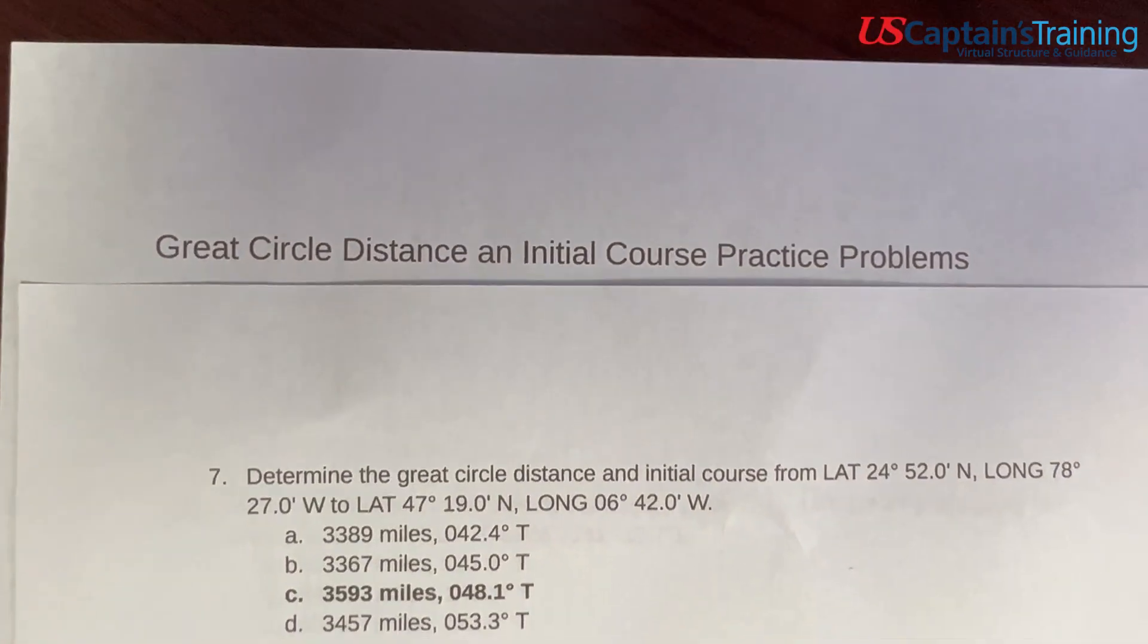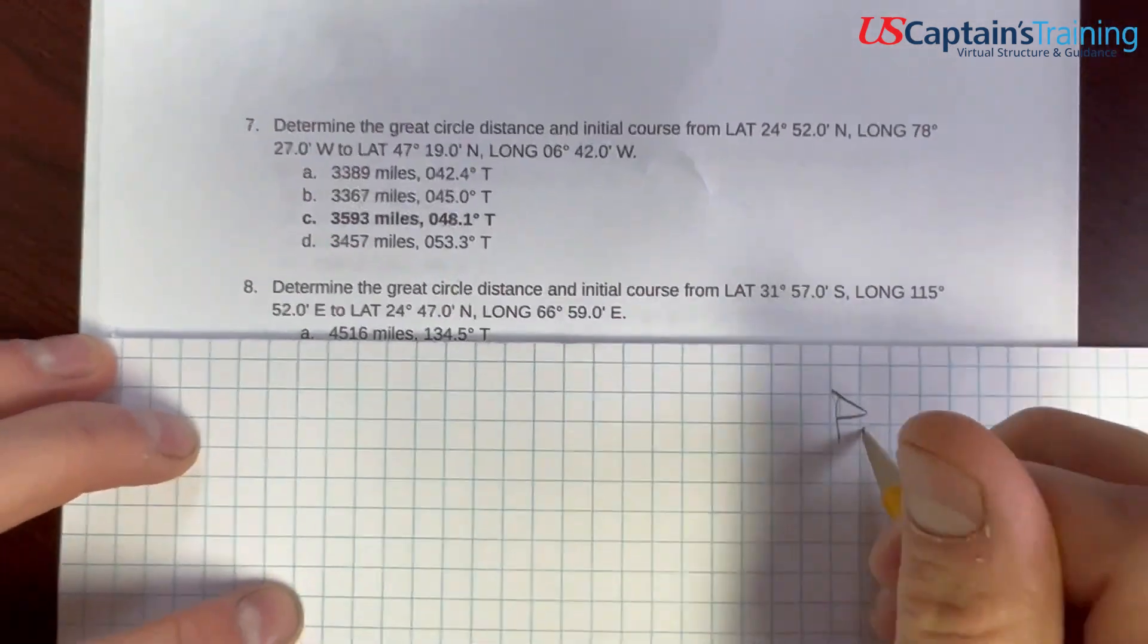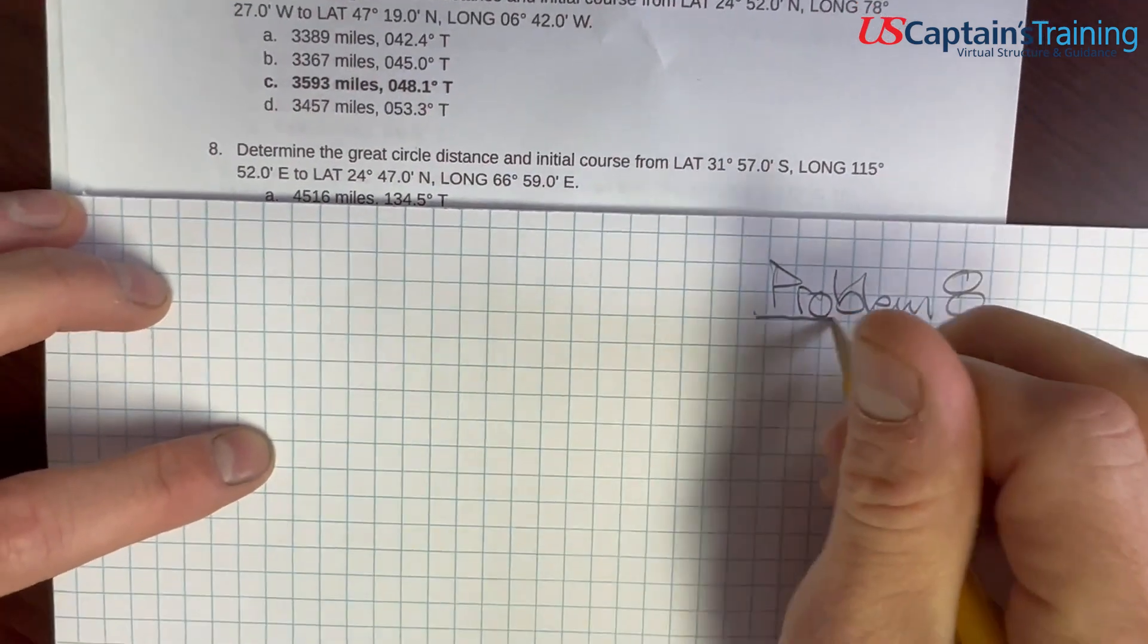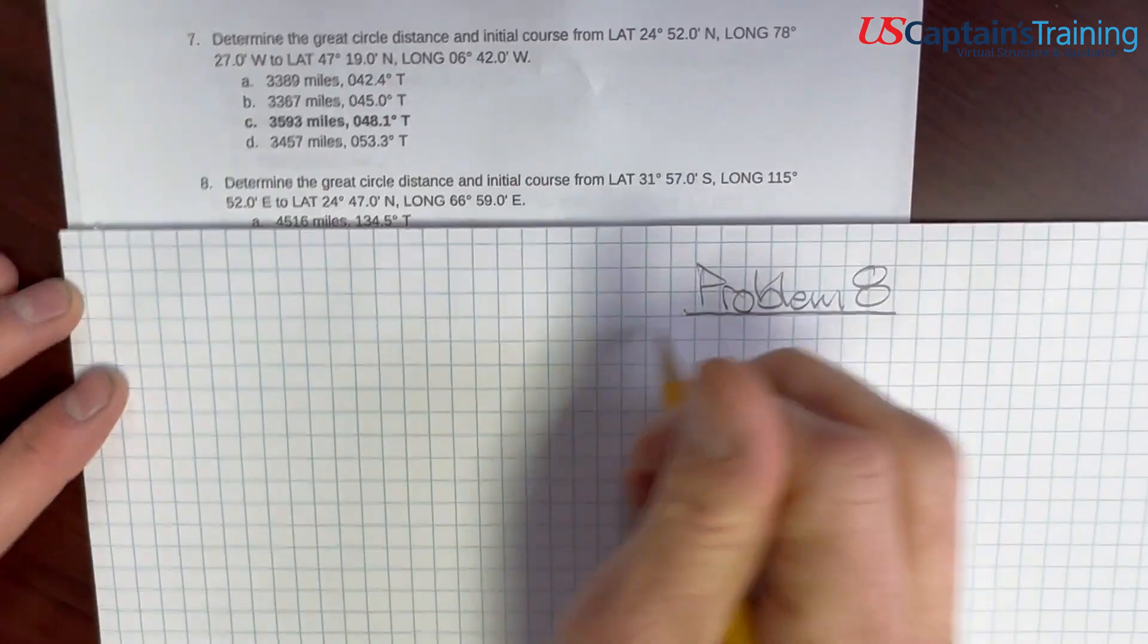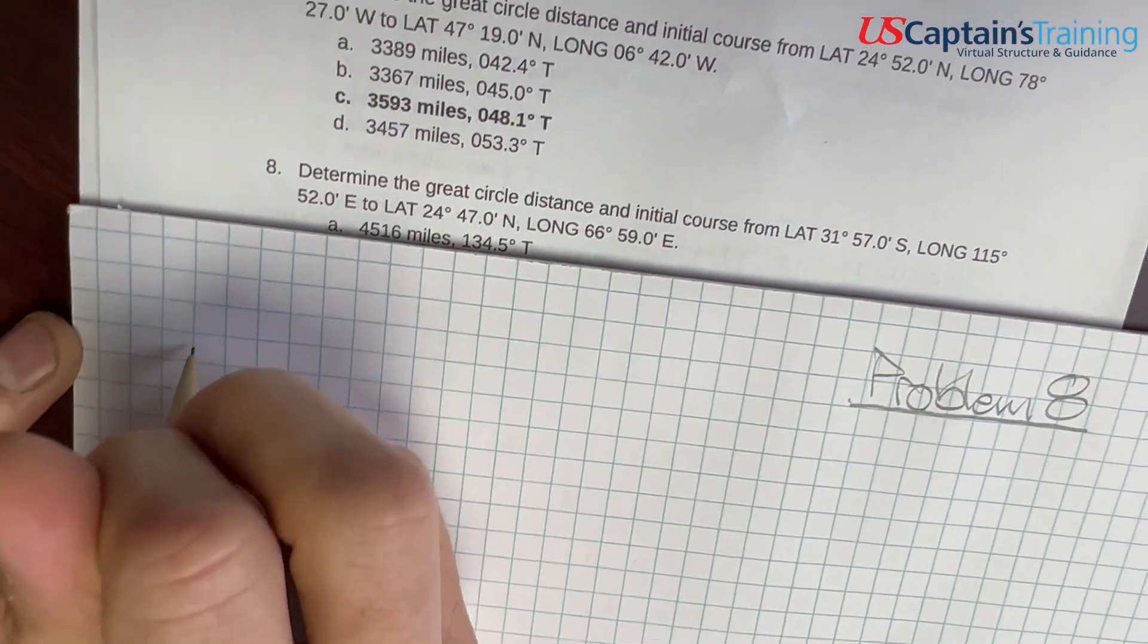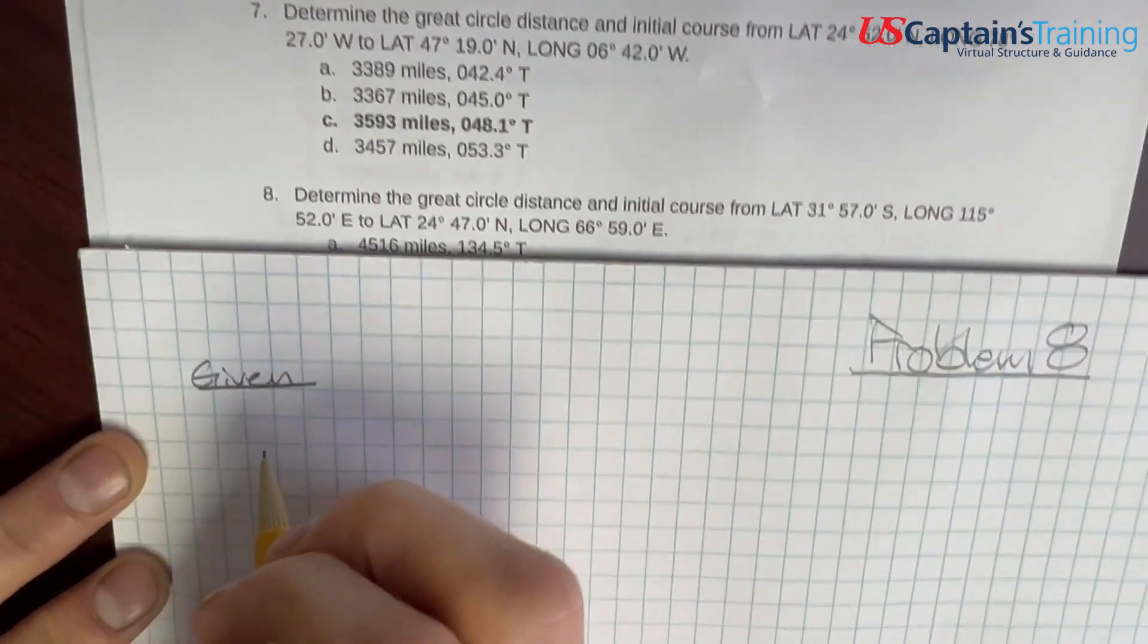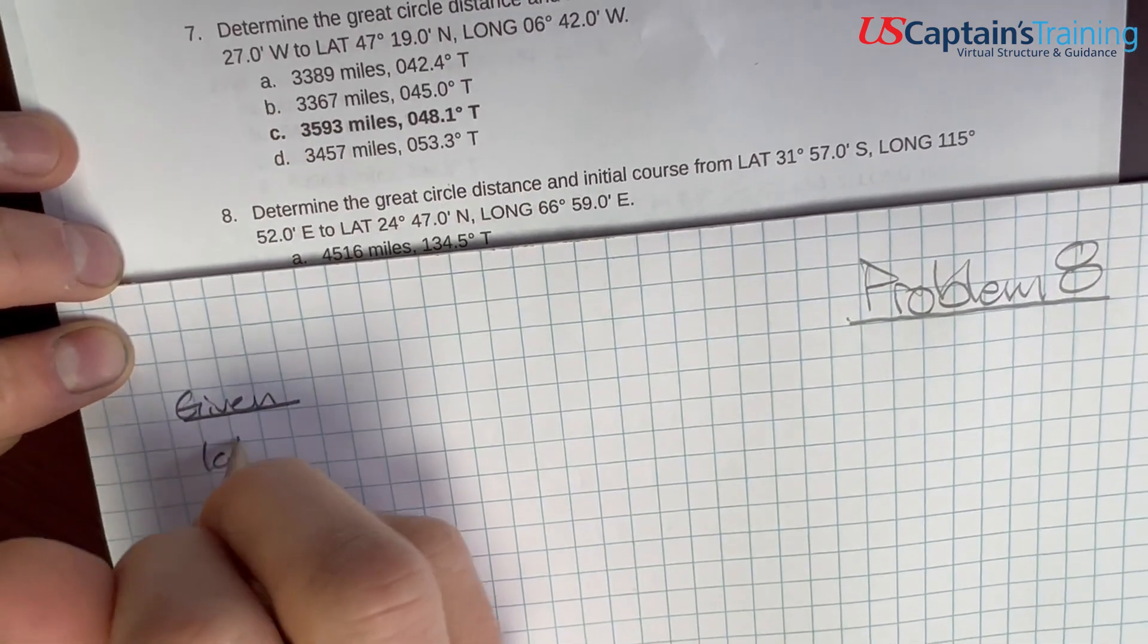Great Circle Distance and initial course, practice problem 8. These problems give a new meaning to plug and chug. The math train is leaving the station, here we go. Everything given in the problem we'll record here, and it's just two sets of coordinates. So, we have lat 1,